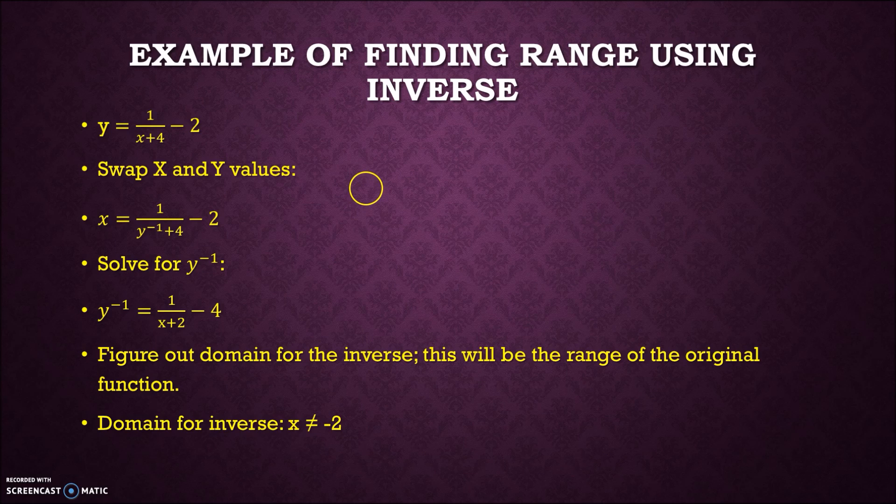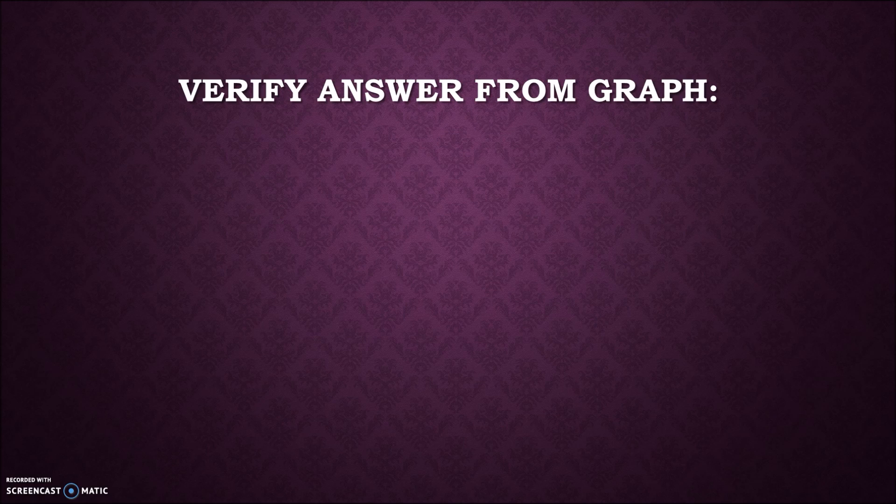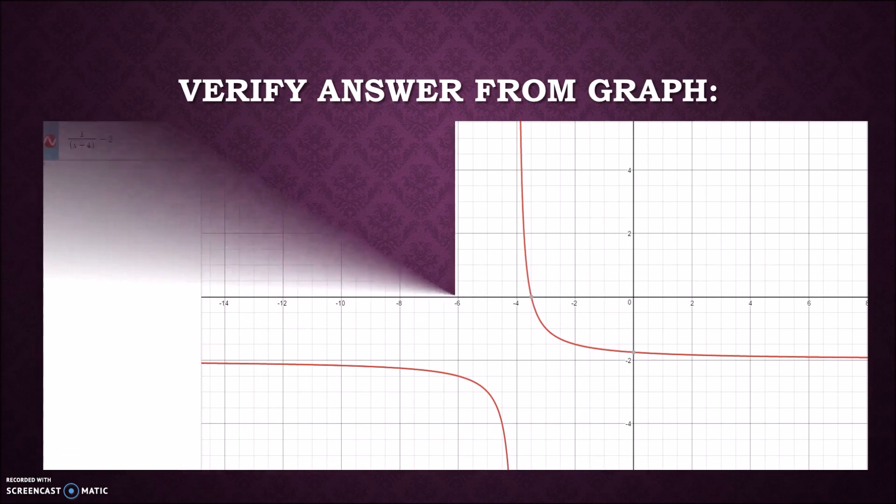We can also check our answer from the graph. Right here you can see this is a graph of the original function, and indeed the range is all real numbers except y = -2.